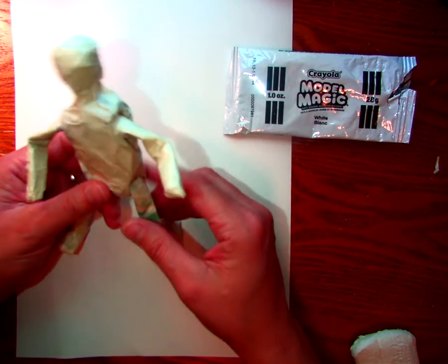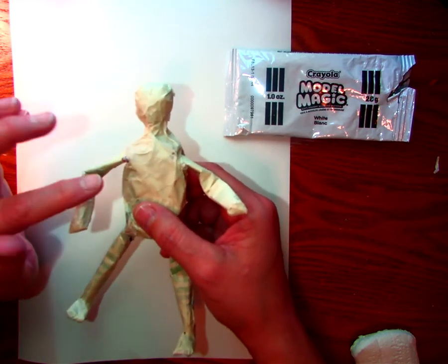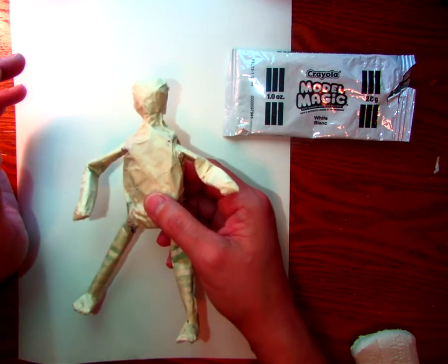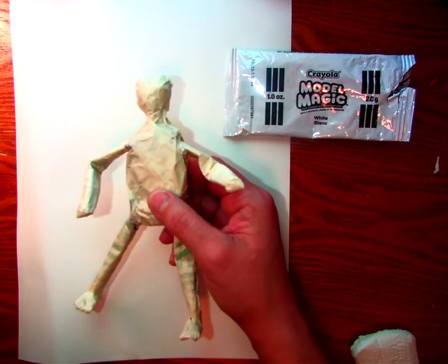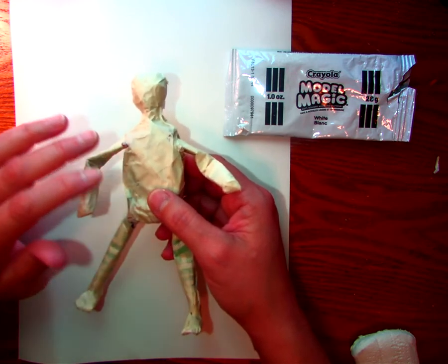You do not have to put pipe cleaners in there if you don't want to. You can leave it like that. You don't have to necessarily put Model Magic or plaster wrap or paper mache or anything over that. If you want to paint this as is, that's completely fine.